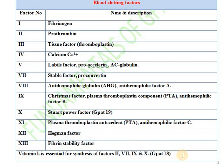Amongst these 13 factors, a few are vitamin K or calcium dependent. Vitamin K is essential for the synthesis of factor 2, factor 7, factor 9, and factor 10. This was a question asked in GPAT 2018. These are the different types of blood clotting factors — this is important for competitive exams.